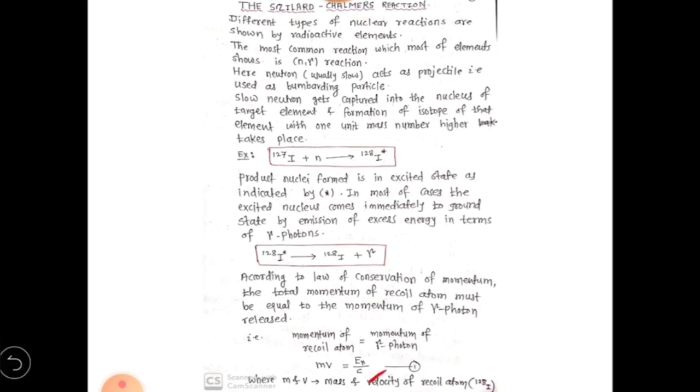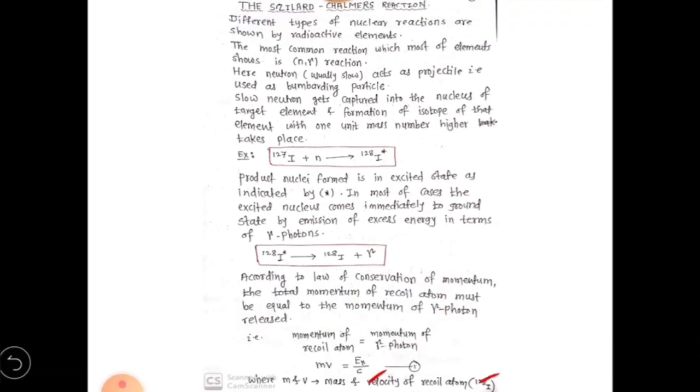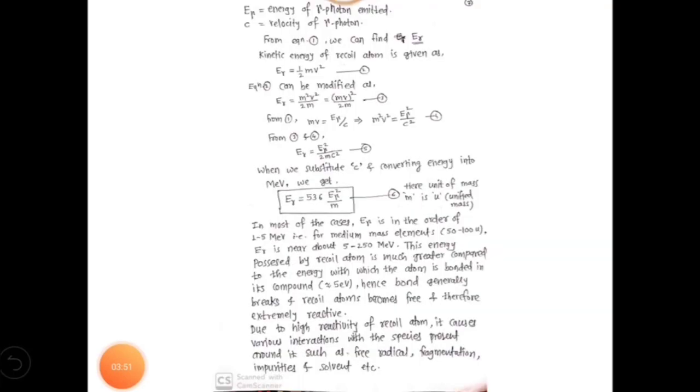Mathematically we can write m·v = E_gamma/c, which is equation number 1, where m and v are the mass and velocity of recoil atom (that is, the iodine-128 isotope which is formed). Here E_gamma represents energy of gamma photon which is emitted during n-gamma reaction, and c is the velocity of gamma photon, which is nearly same as that of velocity of light in air medium—that is, 3×10^8 meters per second.